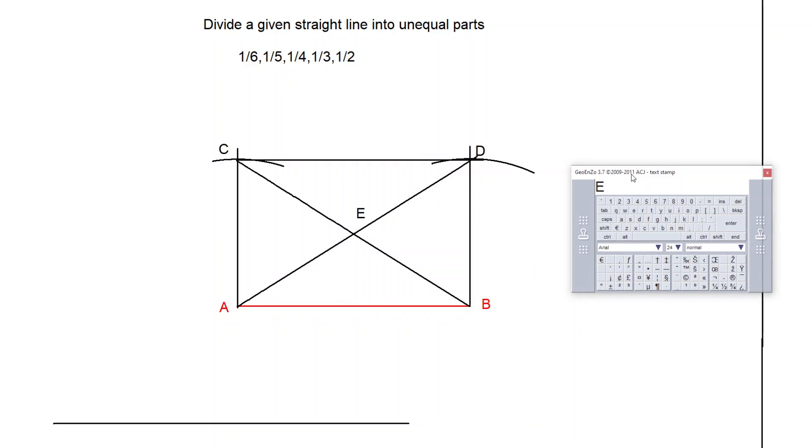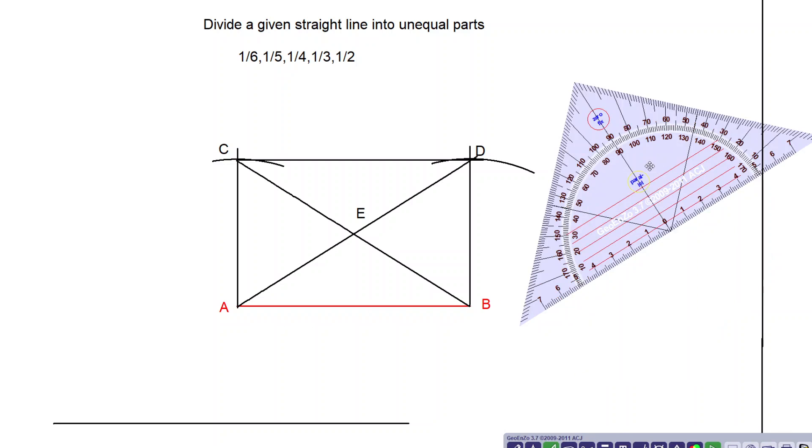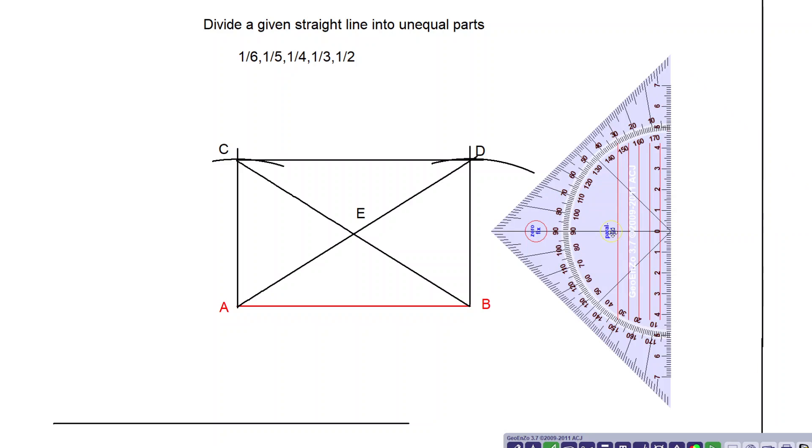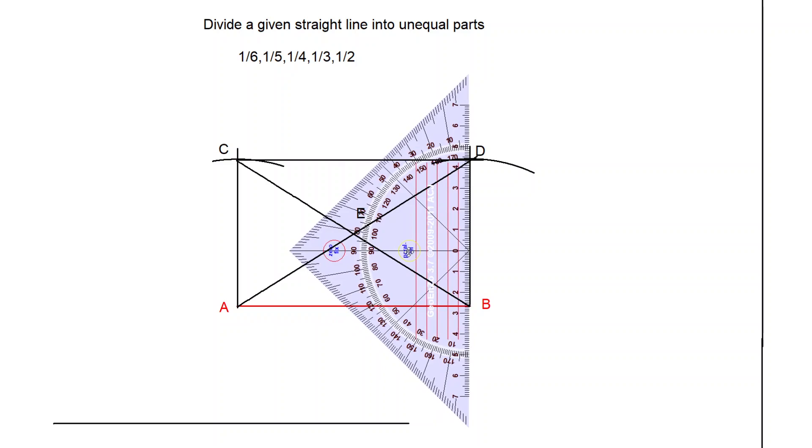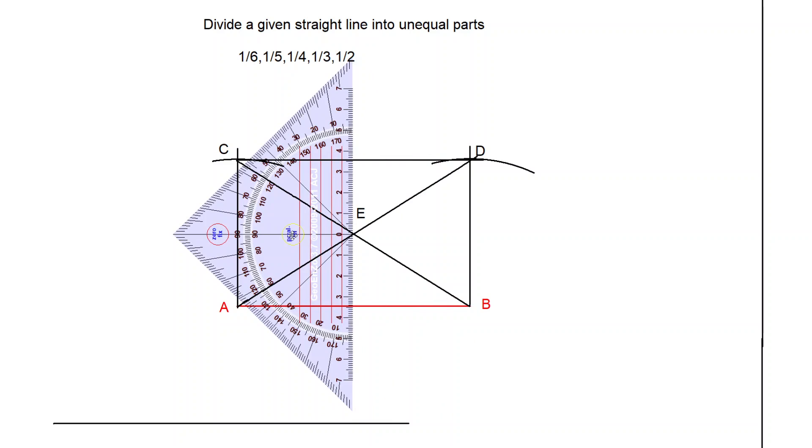Now from E, draw a perpendicular on line AB. Simply I can draw the perpendicular using this, or otherwise what you can do, you can use this. Then you can do it also. Using that also I can draw the perpendicular. Now you see exactly 90 degrees.